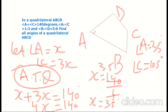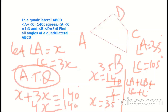Now we find angle B as well as angle D. Remember the angle sum property of a quadrilateral, which states that angle A plus angle B plus angle C plus angle D is equal to 360 degrees.